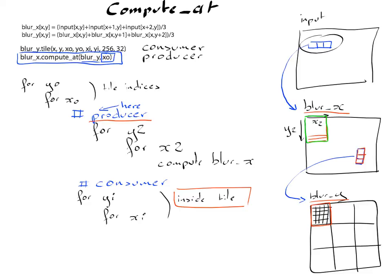And this is it. So in summary, we've done two important things with compute at. The first thing we had to do was to figure out where to insert the producer in the loop nest of the consumer.